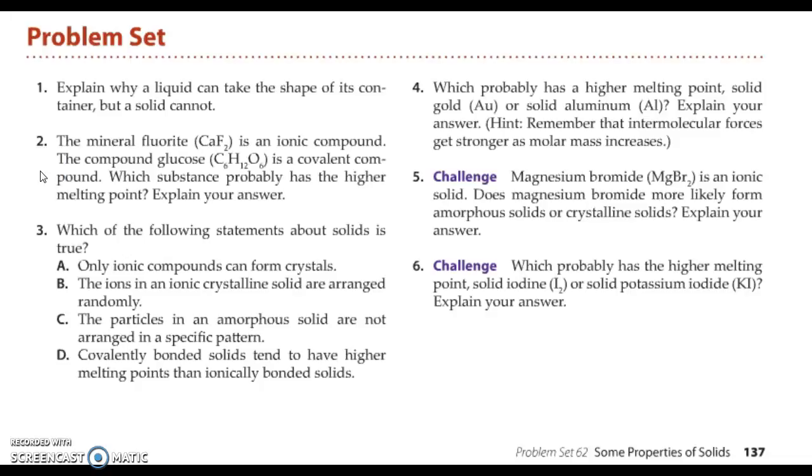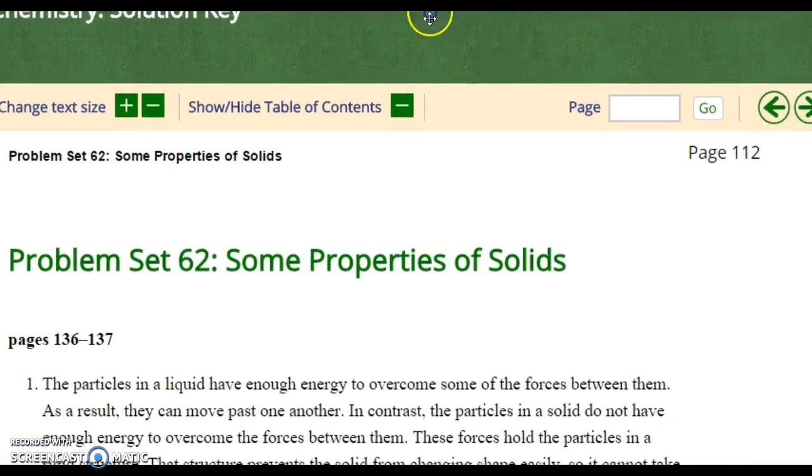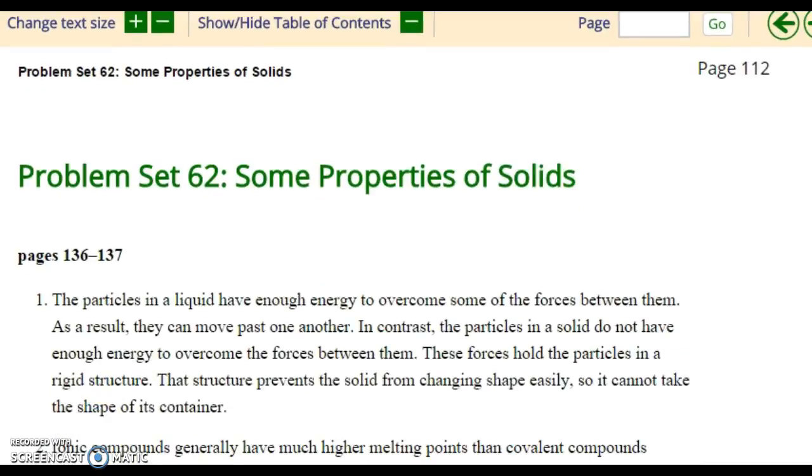Question 2. The mineral fluorite, CaF2, is an ionic compound. You know that because it's a metal and a non-metal. The compound glucose, C6H12O6, is a covalent compound. Which substance probably has the higher melting point, and why? So hit pause, get your answer.